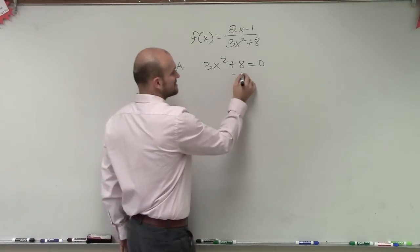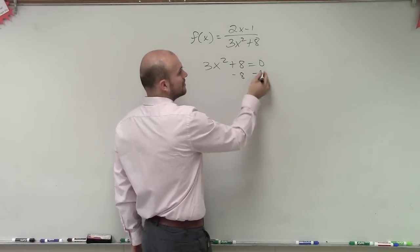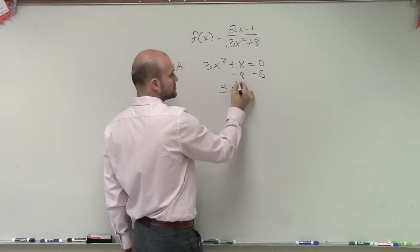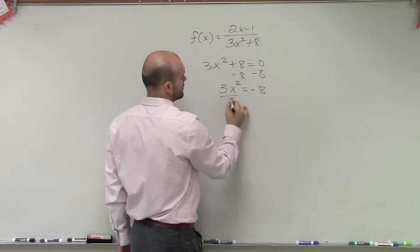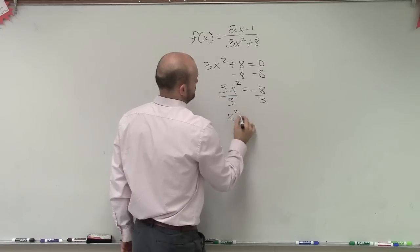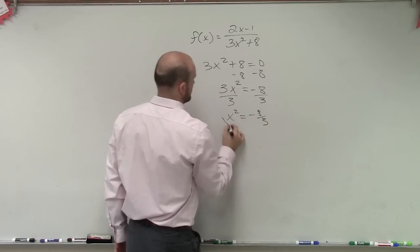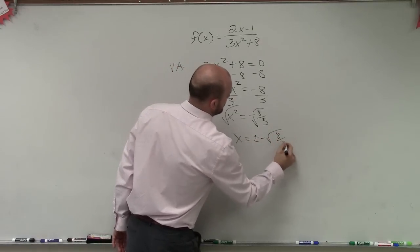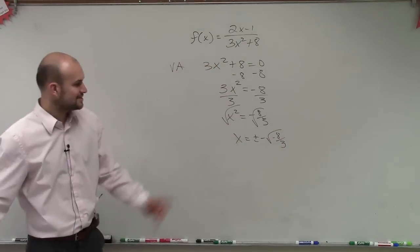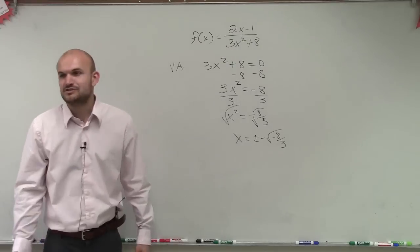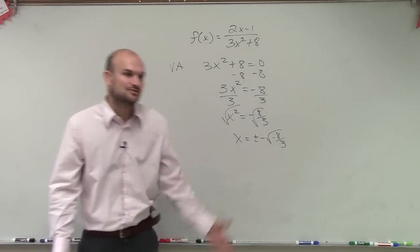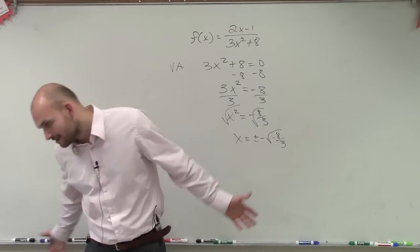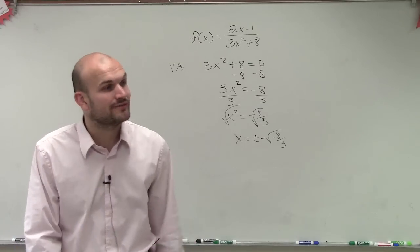I can subtract the 8. Since I only have one x term, I can just use inverse operations, which we call the square root method. So we look at this, and we have x equals plus or minus square root of negative 8 thirds. Can you take the square root of a negative number? No.